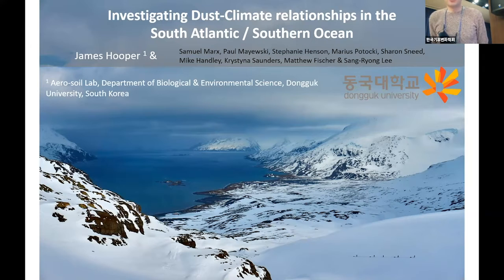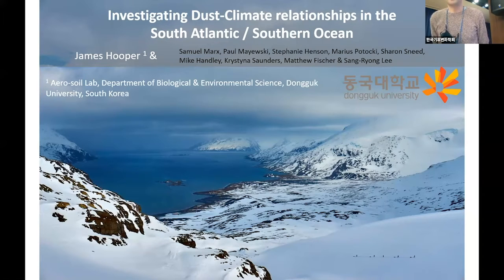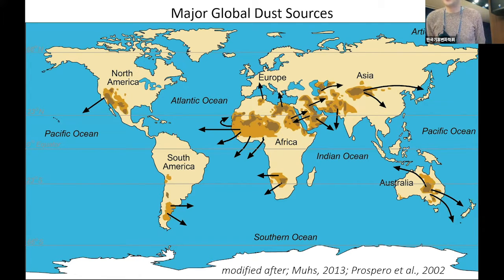My presentation today looks at the impact of dust deposition on the South Atlantic and Southern Ocean, and proxies for the impact of ocean fertilization and phytoplankton growth. The key mechanism is the iron hypothesis, in which iron contained in dust is deposited in nutrient-limited areas of the Southern Ocean, stimulating phytoplankton growth, which may then sequester carbon dioxide from the atmosphere and deposit it to the sea floor.